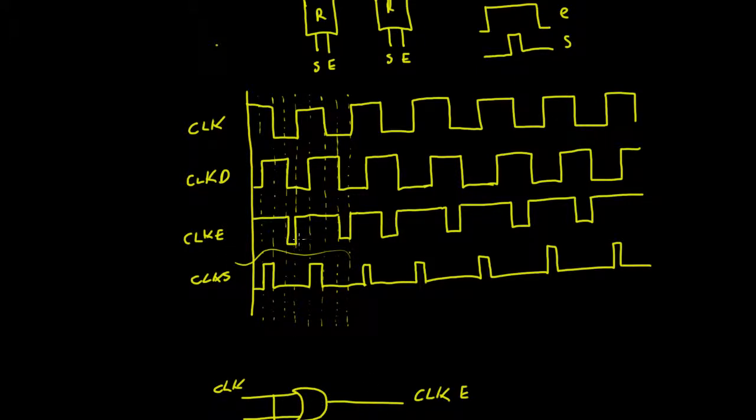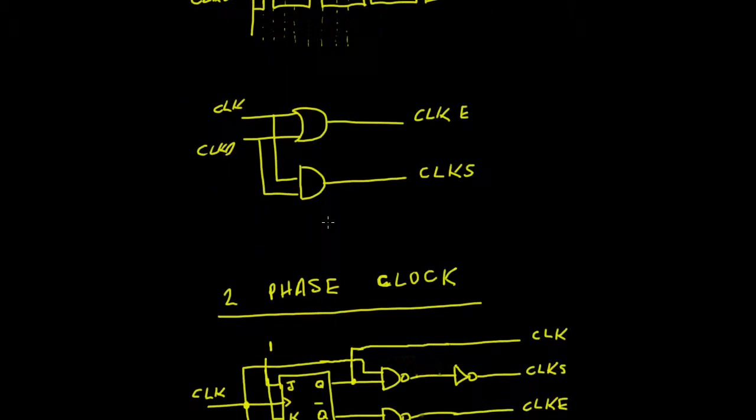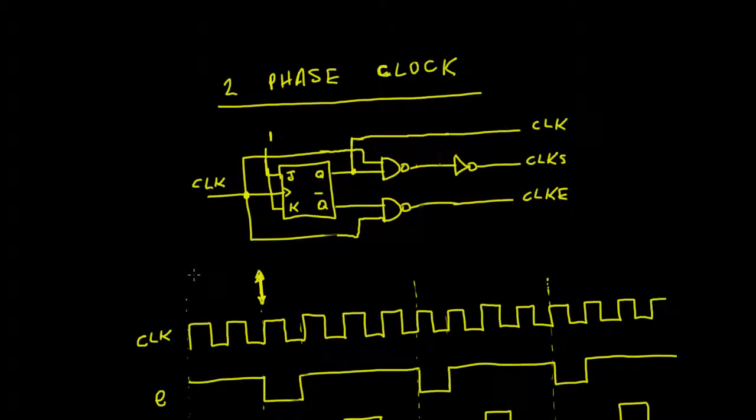That would give us these two clock pulses here, this one here and the bottom one there as well. So those two clock pulses are the pulses we're looking for because the clock enable completely encompasses the set.